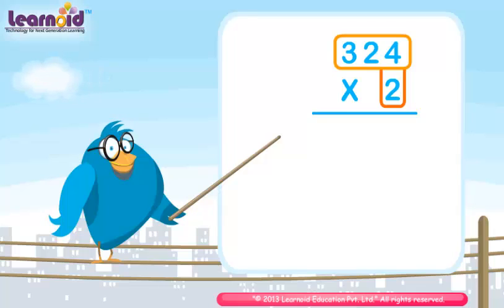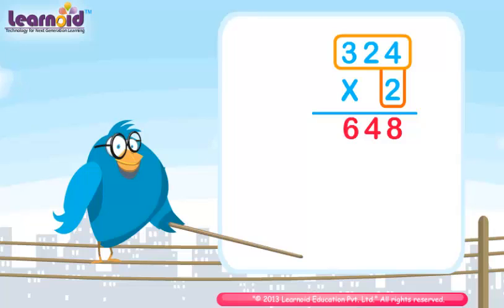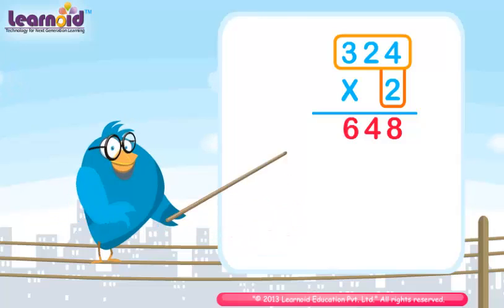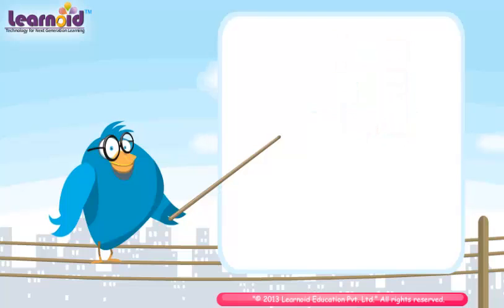Two into four is eight. Two into two is four. Two into three is six. Product is six hundred forty-eight.